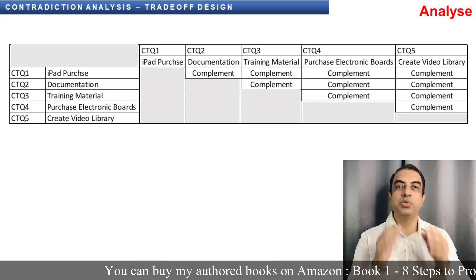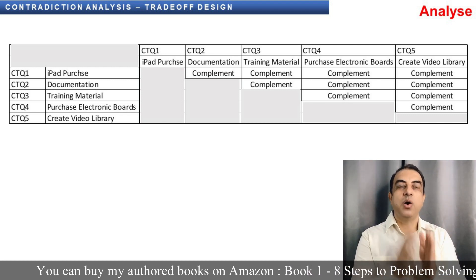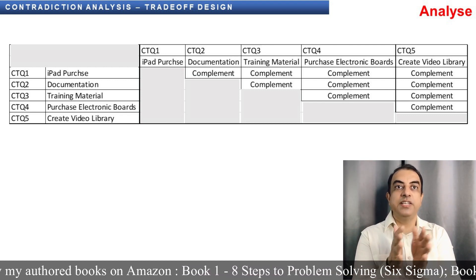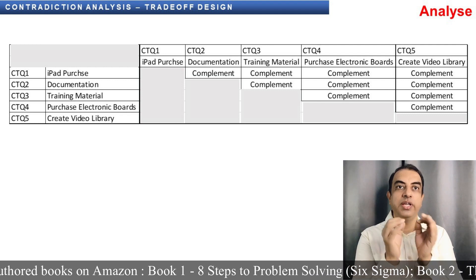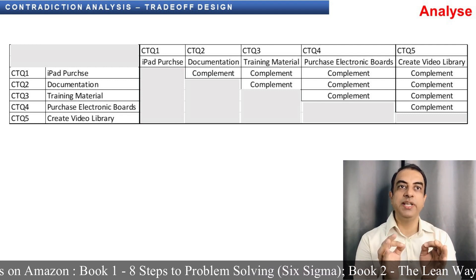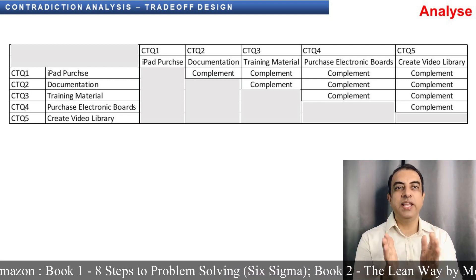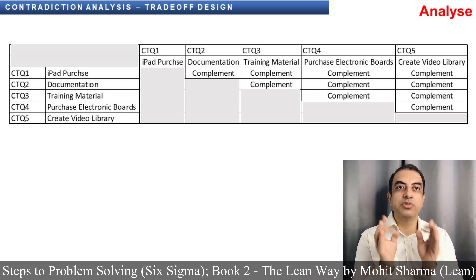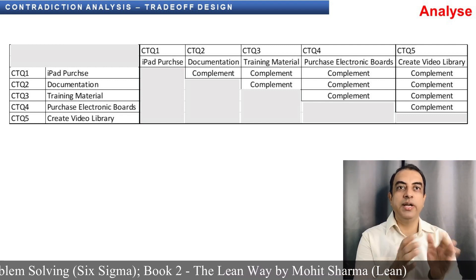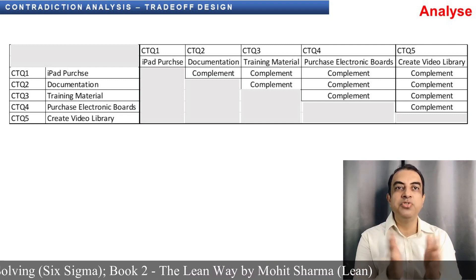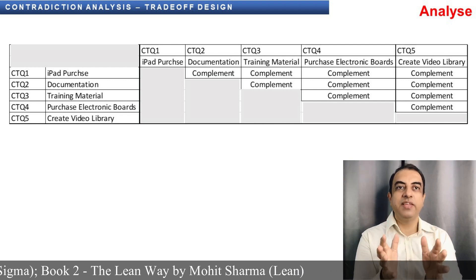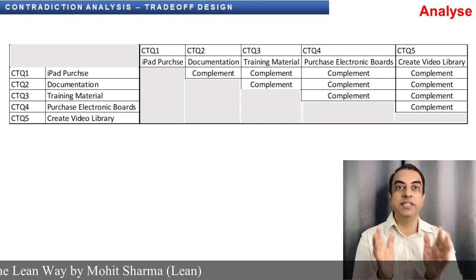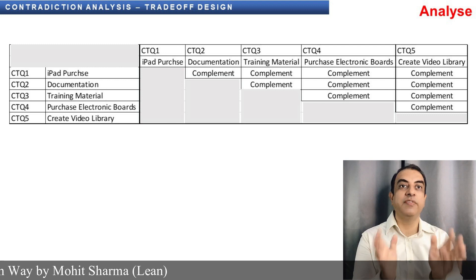The next thing is to study the contradiction analysis. All the CTQs are studied with each other to figure out if there is any contradiction between two CTQs, in which case a trade-off is to be done. If all the CTQs complement each other, then we go ahead and create the new training module. In this case, all the CTQs complement each other and the team is progressing further.